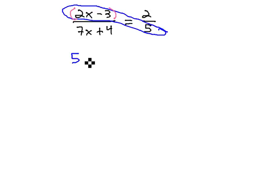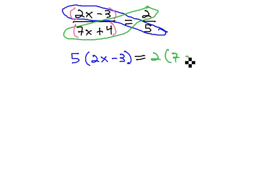The first diagonal, then, is 5 times the quantity 2x minus 3, which would be equal to the other diagonal 2 times the quantity 7x plus 4. The most common mistake made on problems such as this is students forget the parentheses around the binomials.